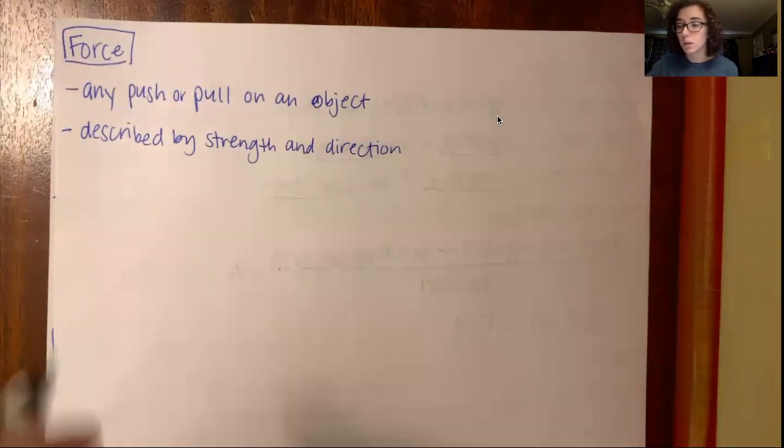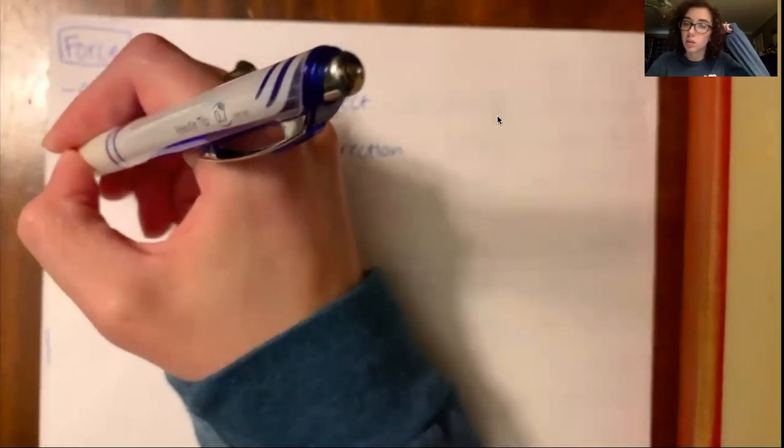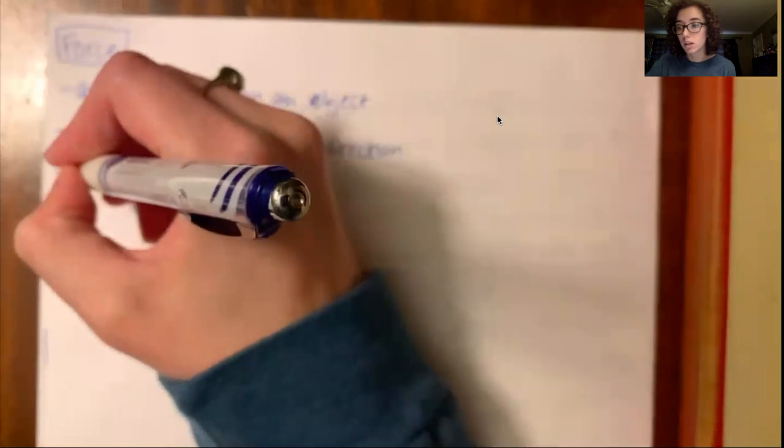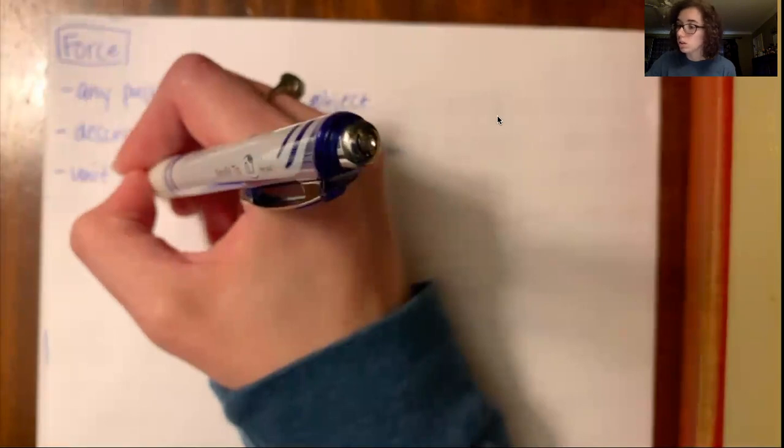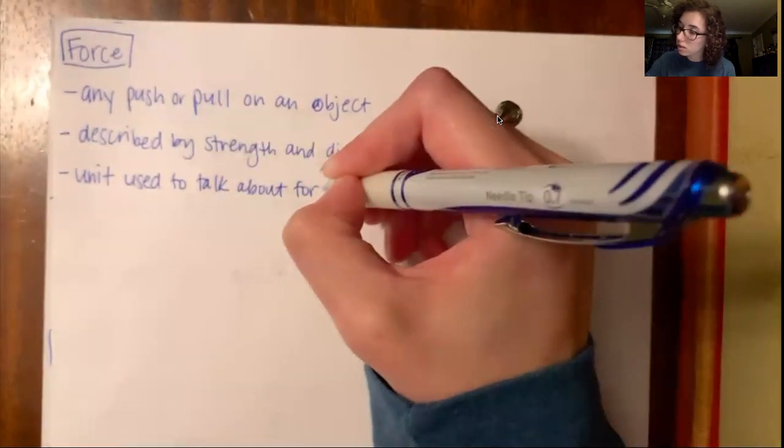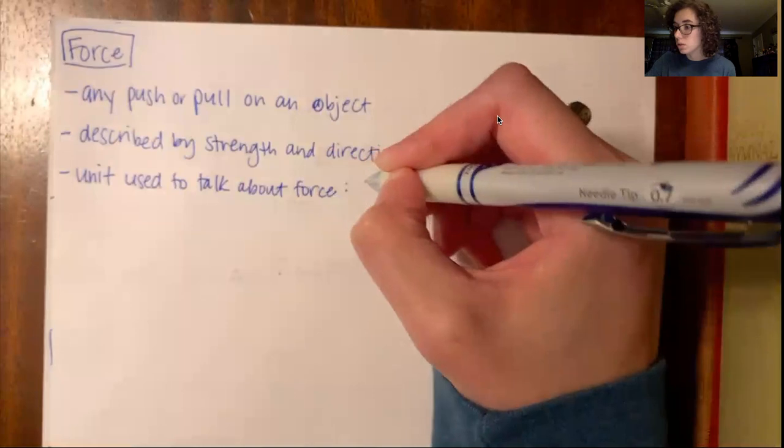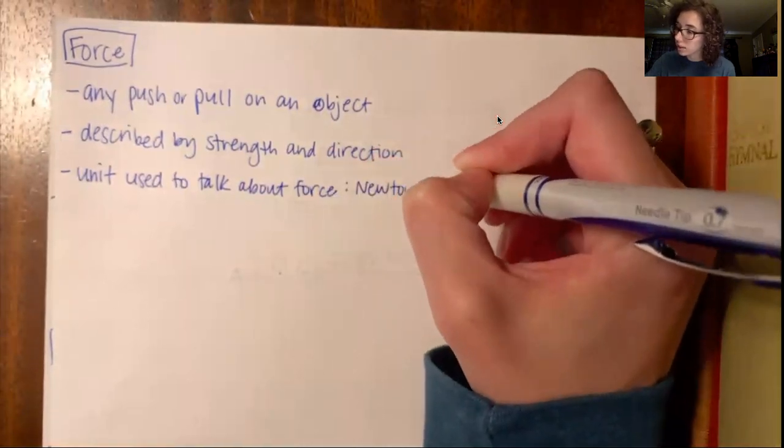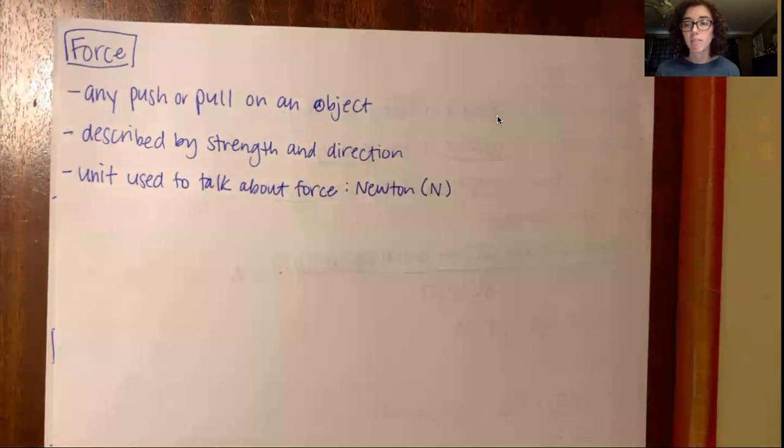Okay, so the unit that we use, since we were talking about units of acceleration and velocity and things yesterday, the unit used to talk about force is the Newton. Okay, and the abbreviation is a capital N. So you may or may not have ever heard of Sir Isaac Newton, but he is like super big in the physics world for a lot of his discoveries. And so the unit for force is named after him.